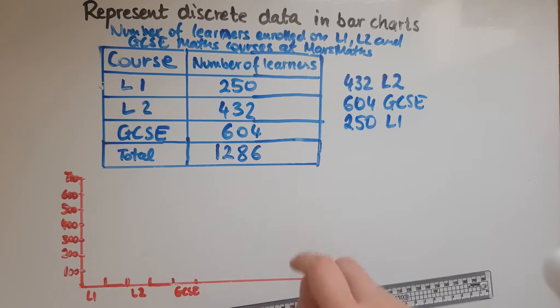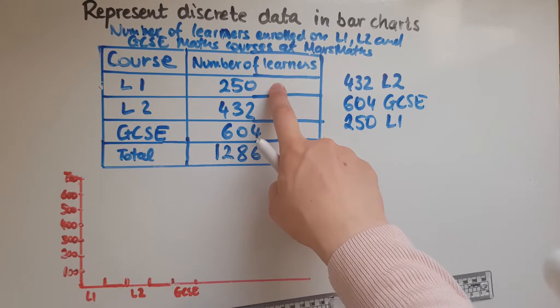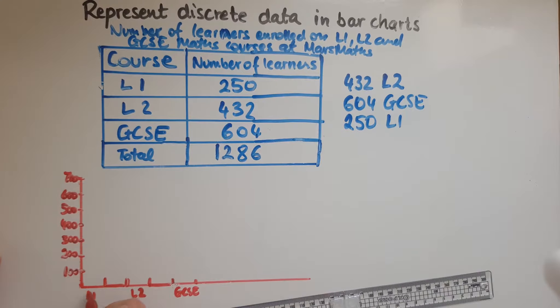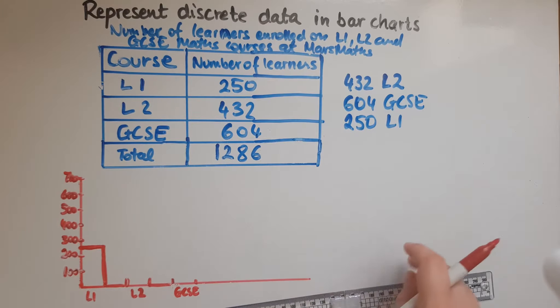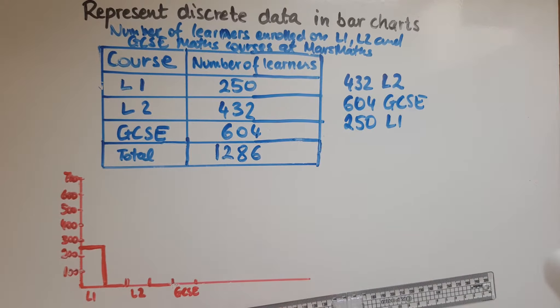So we'll see how that looks like in a second. Level 2, and then we have GCSE. So level 1 goes up to 250. So that's nice and easy to work with. We've got to 200, not 300, so it's in between, exactly in the middle of 200 and 300. So you'd use a ruler to measure that and to draw the lines as well.